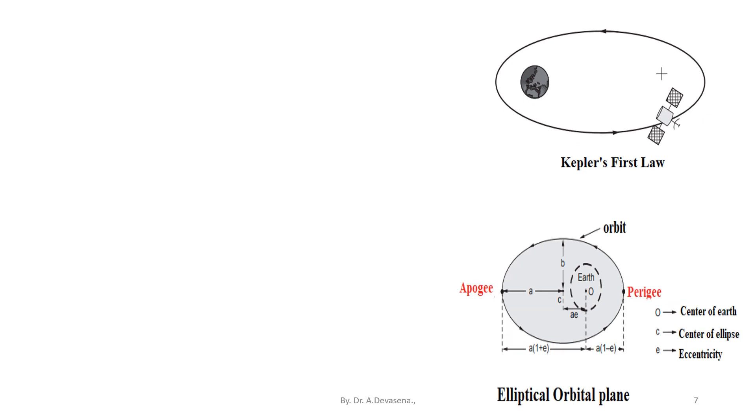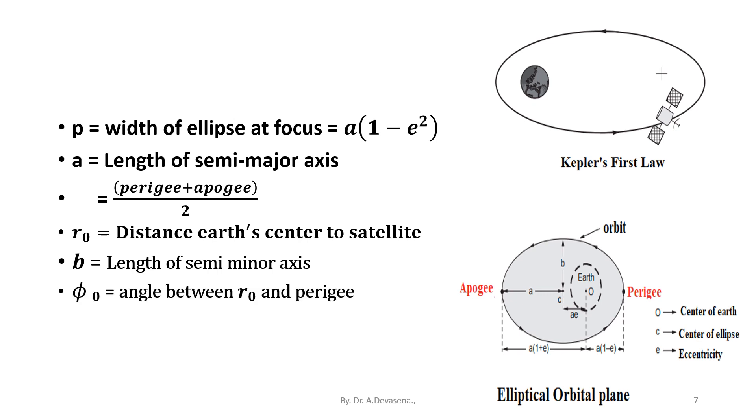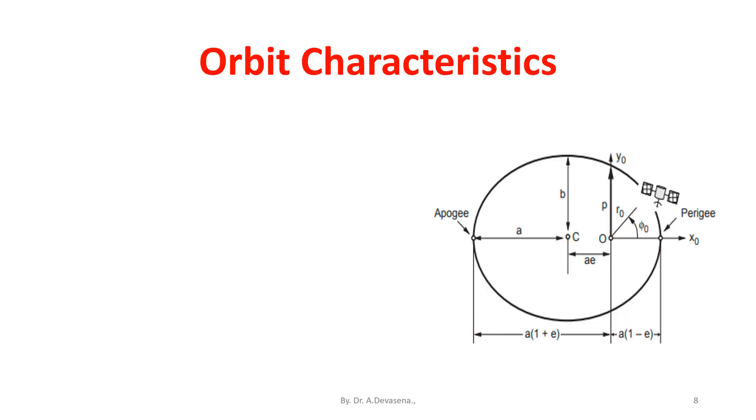P is equal to width of the ellipse at the focus, that is equal to A into (1 minus e square). The value of A is equal to the length of semi-major axis, its value is equal to perigee plus apogee divided by 2. R0 is the distance of earth's center to satellite. B is the length of semi-minor axis. Phi 0 is equal to angle between R0 and perigee.